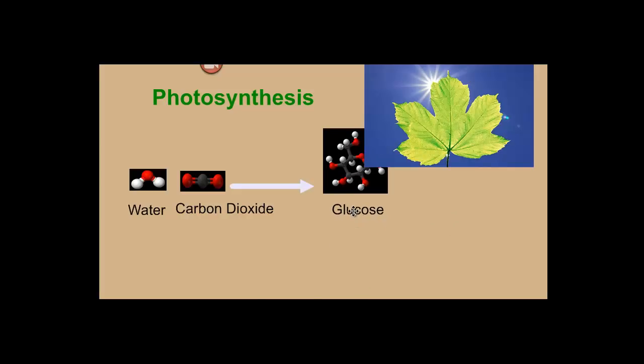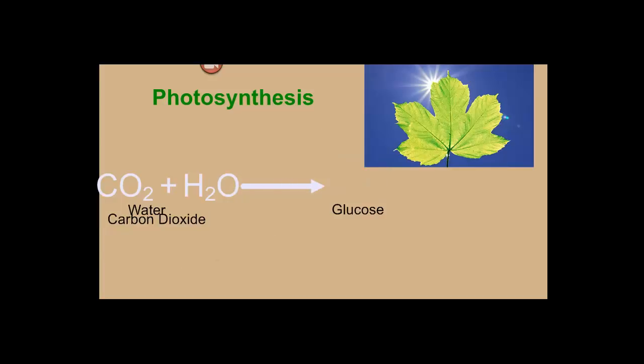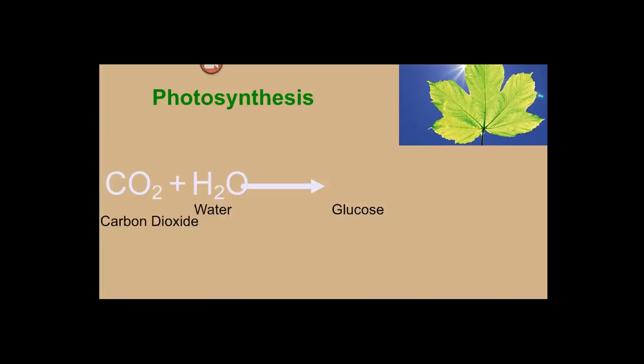And if we write those out as a chemical equation, the water and carbon dioxide are written like this. This is flipped around, this is the water, and this is the carbon dioxide. So we got water, carbon dioxide,